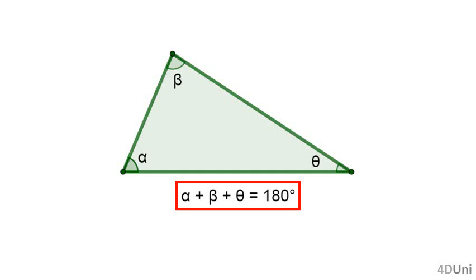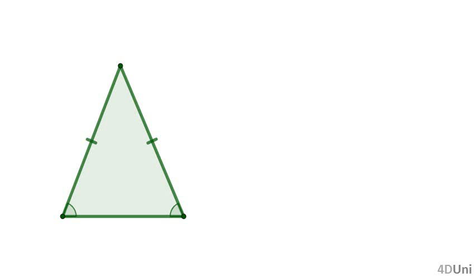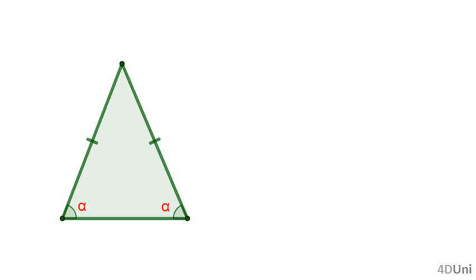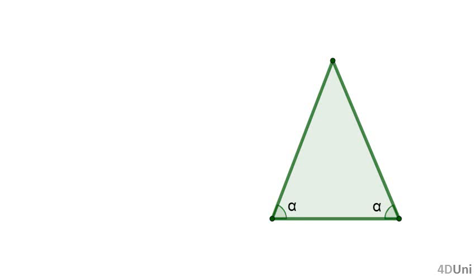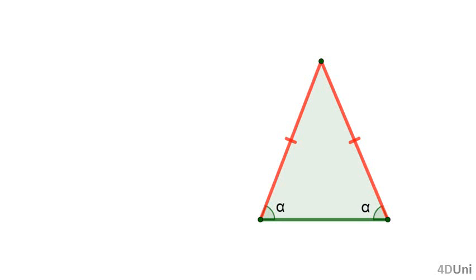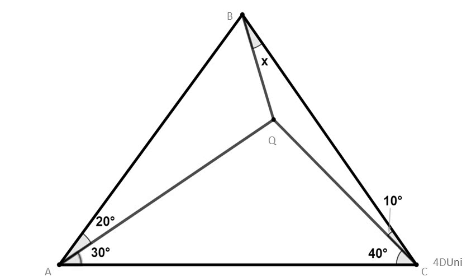The sum of the measures of the three interior angles is 180 degrees. If a triangle has two sides of equal length, it is called an isosceles triangle, and the measures of the opposite angles are equal. Something similar happens if we have two internal angles with the same measure — the sides opposite to those two angles should have the same length.